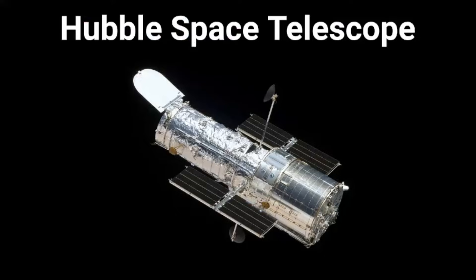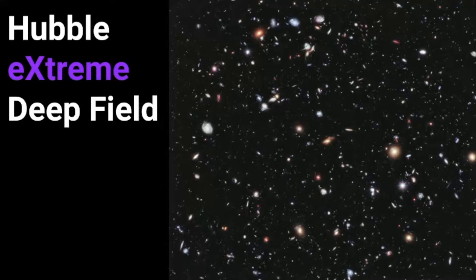This photo was taken by the Hubble Space Telescope and it's called the Hubble Extreme Deep Field. It combines Hubble telescope observations that were taken over a small patch of sky and it has over two million seconds of exposure time.